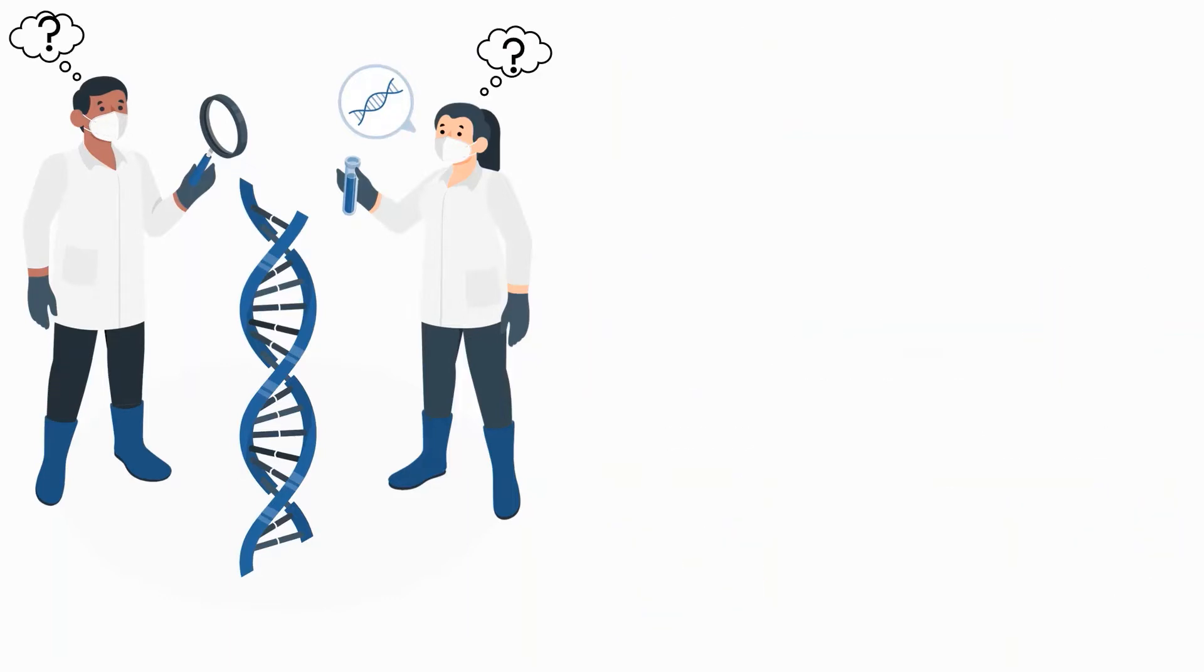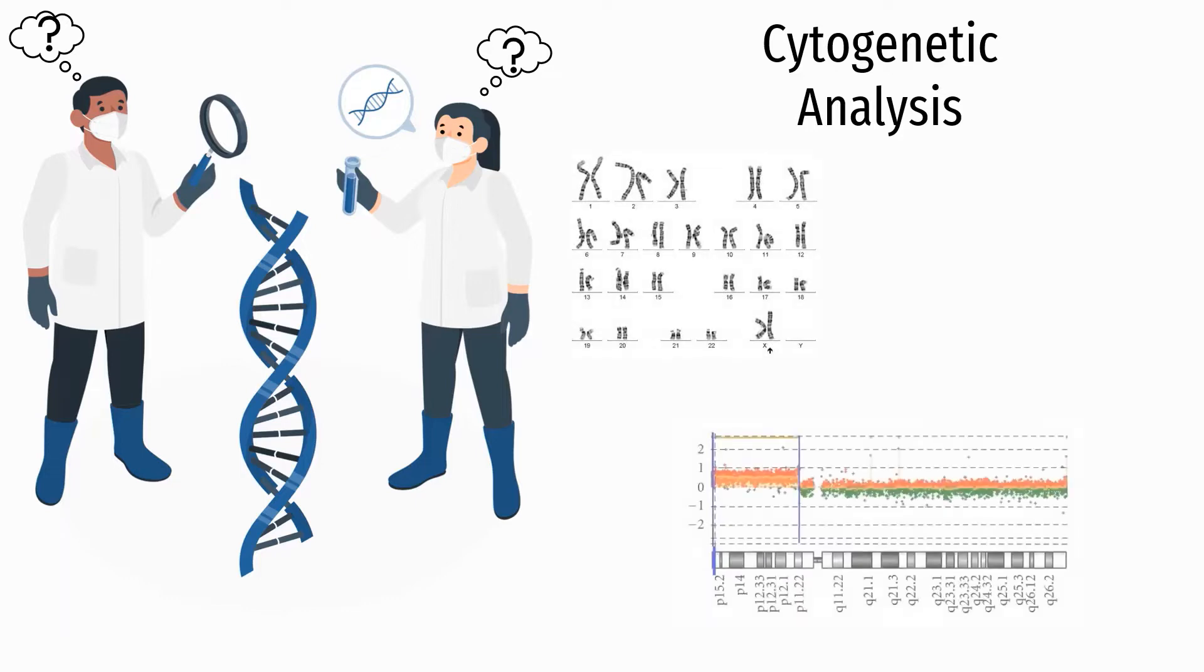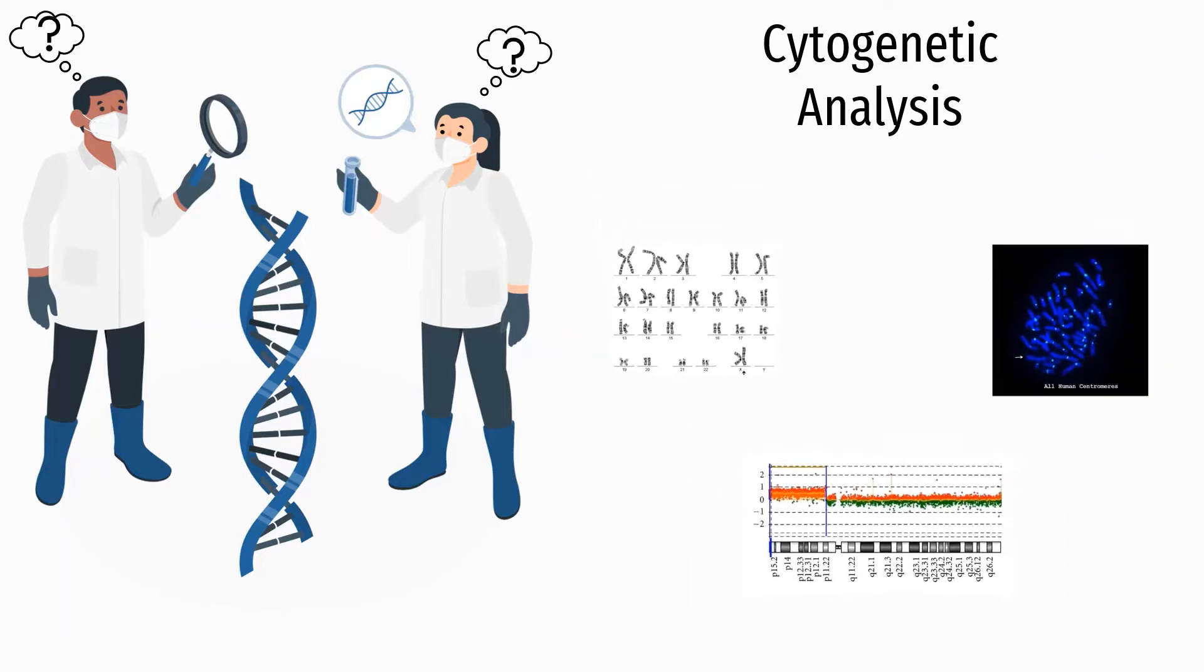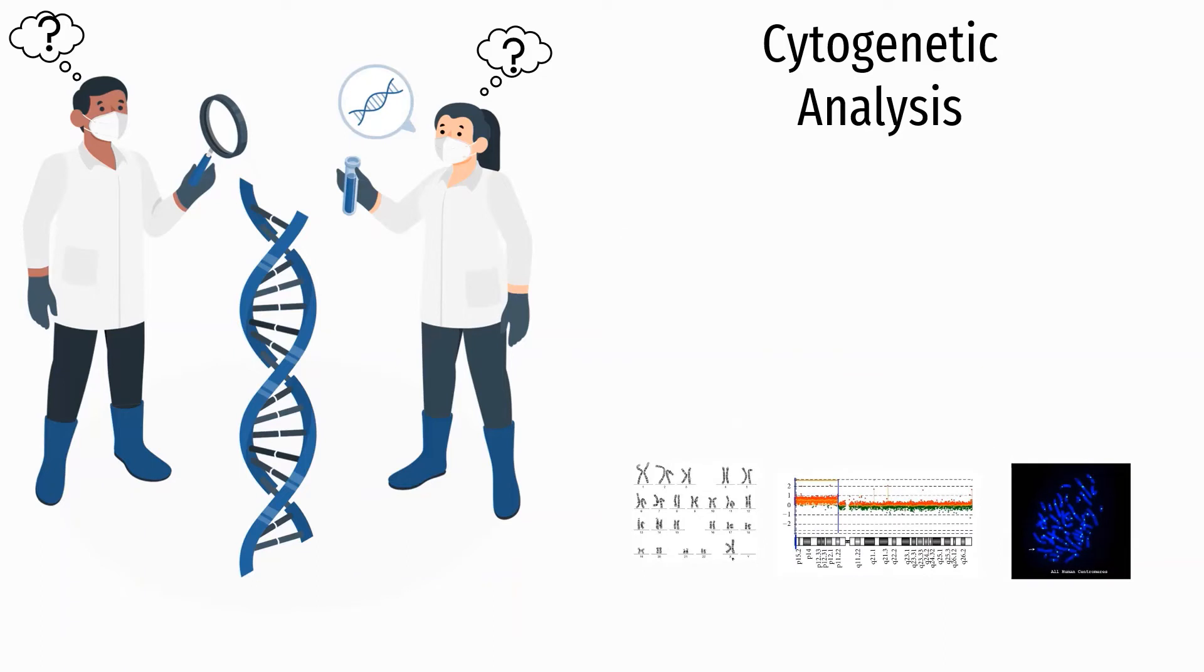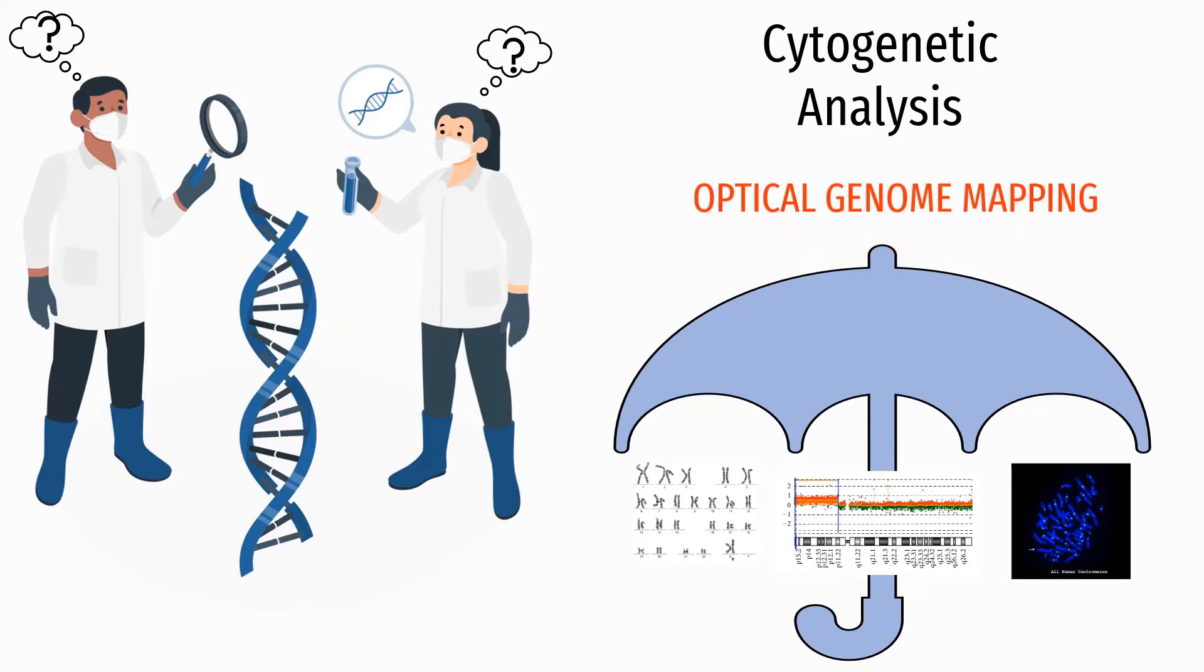What is puzzling about the cytogenetic analysis of these variations is that we are using the same old laborious detection techniques that we used decades ago, including karyotyping, microarray, and fluorescent in-situ hybridization. In such a scenario, optical genome mapping provides a Swiss army knife solution by encompassing all three traditional tests into one single technique, along with the added benefit of detecting variants that existing technologies would otherwise miss.